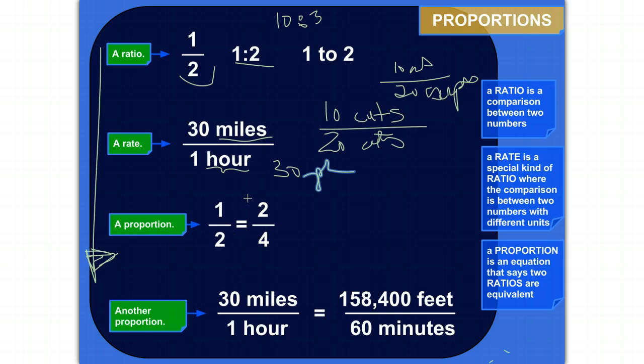A proportion is an equation that says two ratios are equivalent. Ratios are a comparison between two numbers, but you can compare two ratios and say they're equal to each other. So one half is the same thing as two fourths.